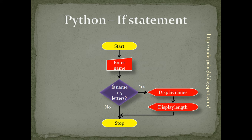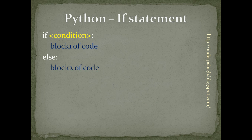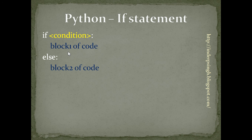Now let us go back and see the second format of the if statement. The second format is: if, followed by a condition, colon, then block 1 of code — followed by else, colon, and block 2 of code. If the condition is true, block 1 of code will be run. If the condition is false, block 2 of code will be run.